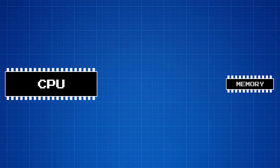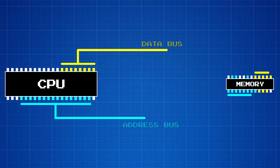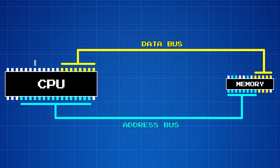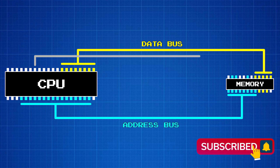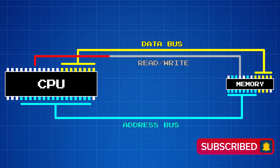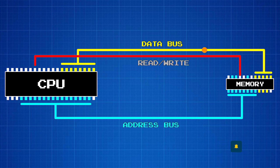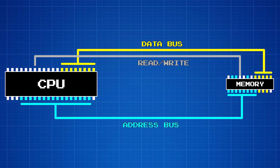But the CPU needs to do more than just read data. Sometimes it needs to write data to a memory location. So to help the chips on the bus determine if there's a read or a write operation needed, there's a connection from the CPU that's designated as a read or write signal. If the read-write pin is set to high, then the CPU wants to read data from the bus. But if it's set to low, then the CPU is telling the chip that it should read the data that the CPU put on the data bus.